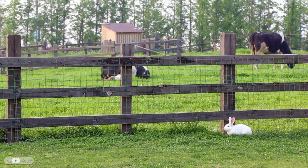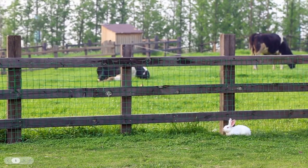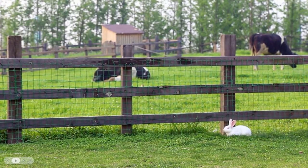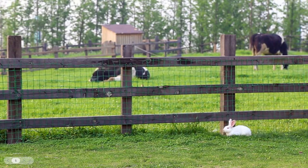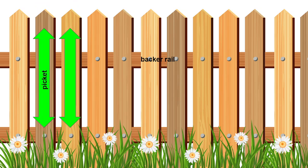Now that you know what parallel lines are, can you see them here? What may be the parallel lines on this farm? Think about that fence — the pickets on the fence are parallel lines. They are the same distance apart and the pickets never meet.